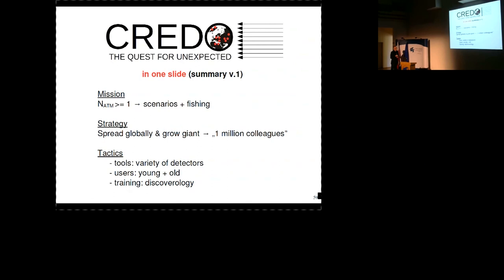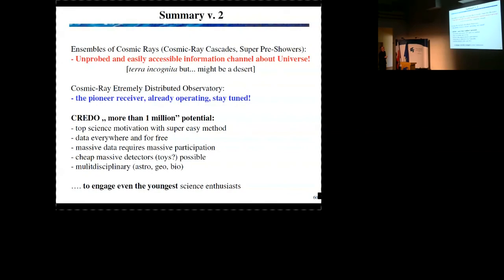Strategy is that we want to spread globally. And we really need to be a giant. We really need to be a giant. Otherwise, we can stop. Tactics. So variety of detectors. Free to everyone. Design. Already made box. Or do it yourself. Whatever variety. Then users. Young. Plus. Old. And training. So version two. Ensembles of cosmic rays or other names. It's really unproved. Channel Terra Incognita. Might be a desert. Who knows. We just enter the land. And we will see. The detector is already operating. You can stay tuned. And the potential is quite clear. We address top science questions. We have data everywhere and for free. We already have detectors. We do not need to invest in principle. We can have very cheap detectors. And we are multidisciplinary.